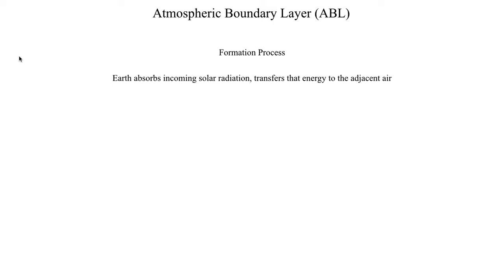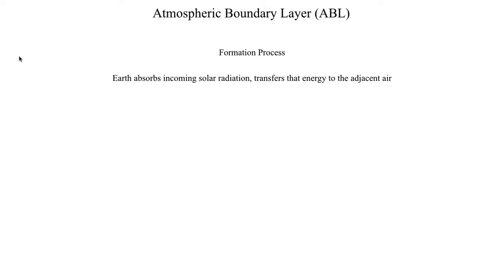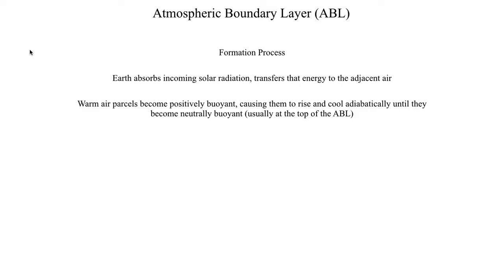The boundary layer is primarily formed by the Earth absorbing incoming solar radiation, which is why it's usually deepest during the summer. As that energy is absorbed, it's transferred into the surrounding air — the air in contact with the ground — that air becomes buoyant and wants to rise. As the air rises, it's cooling adiabatically at the dry adiabatic lapse rate of roughly 9.8 degrees C per kilometer. The boundary layer is characterized by a region of dry adiabatic lapse rate, and sometimes near the surface with especially strong heating, you can get a super-adiabatic layer, meaning the environmental temperature decreases more rapidly than dry adiabatic.